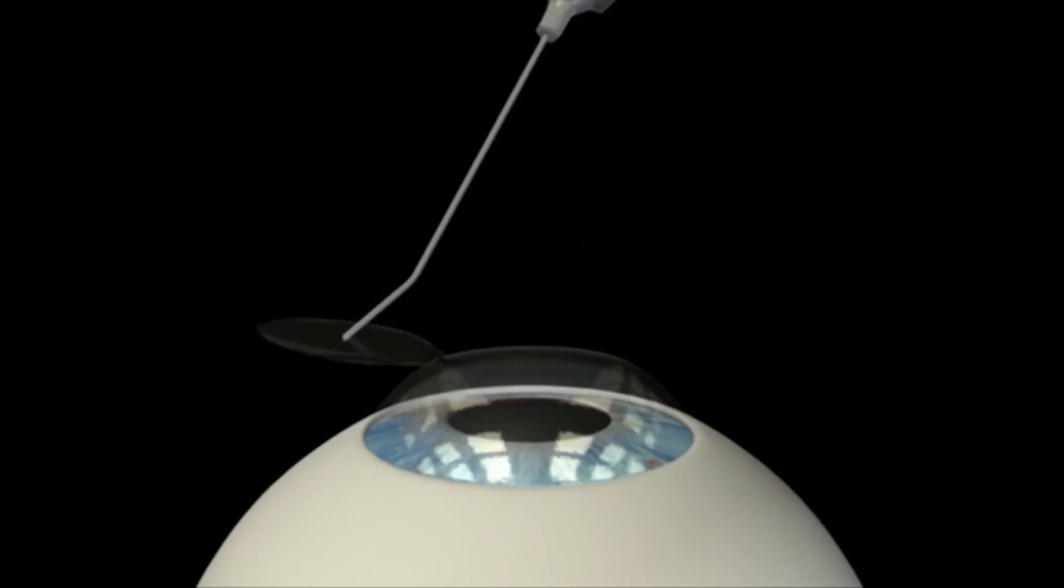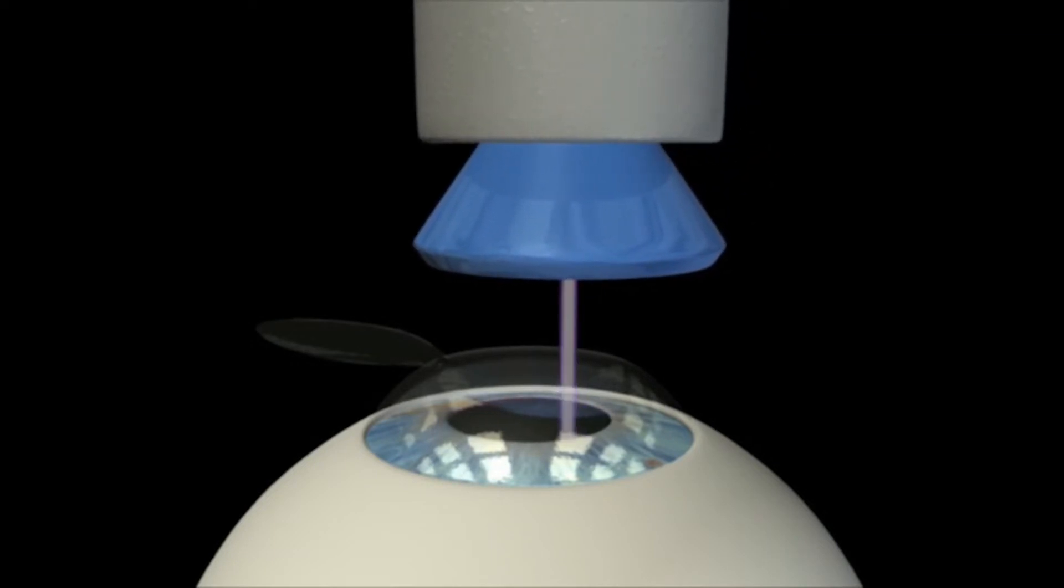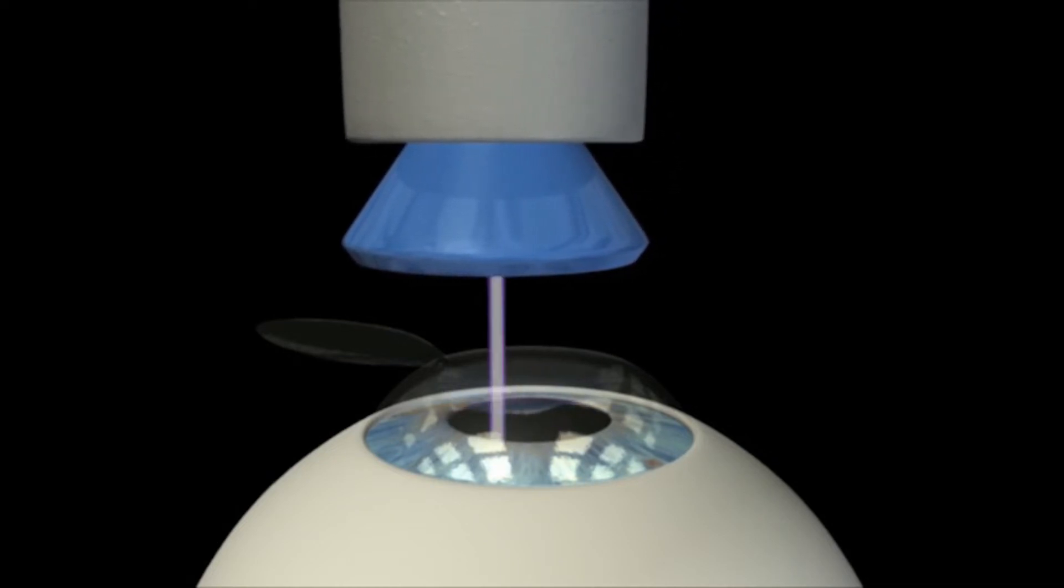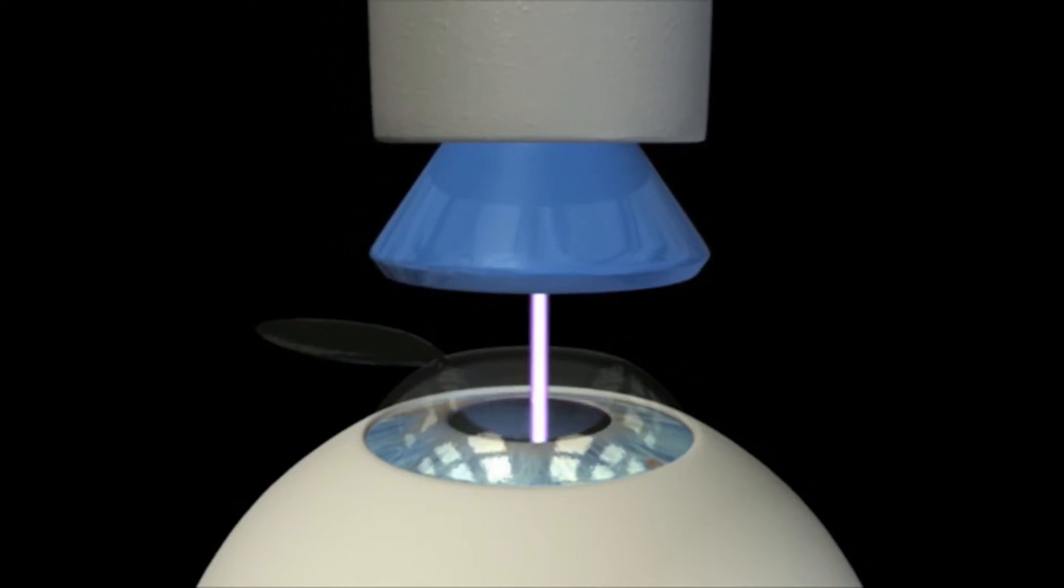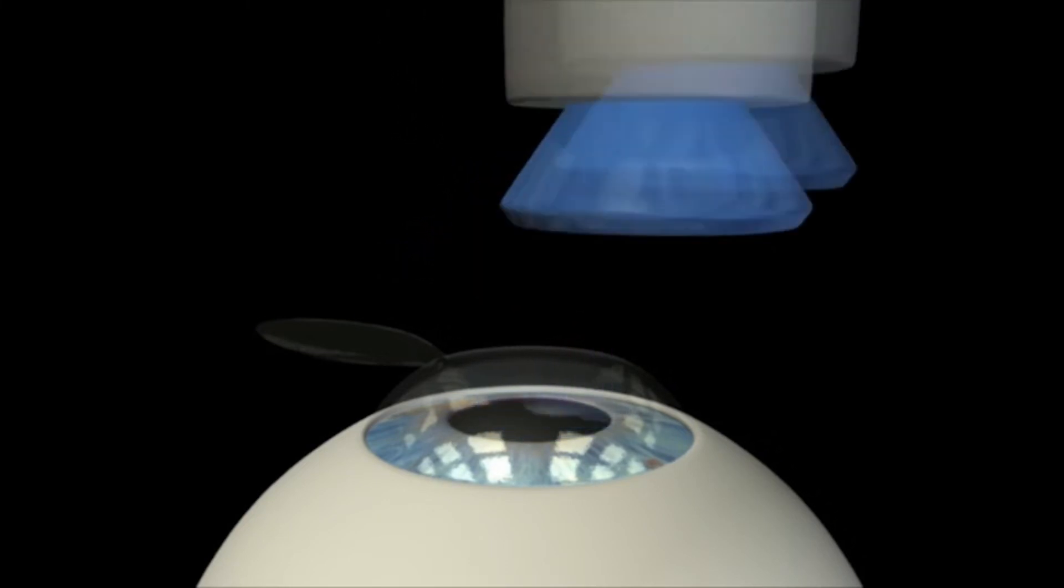Using a special instrument, the flap is folded back so that the excimer laser can reshape your cornea. The excimer laser uses a cool ultraviolet light beam to remove small bits of your cornea and reshape it. This process is done with small laser pulses controlled by a computer. The pulses are based on measurements taken by your doctor in a pre-operation exam.